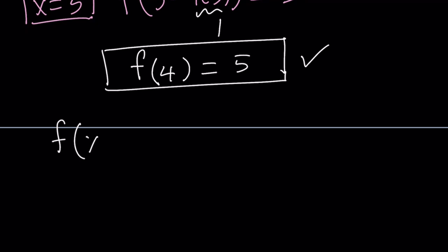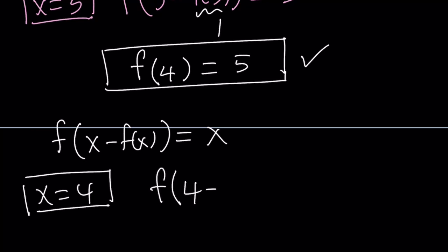So remember one more time, f of x minus f of x is given as x. Let me go ahead and fix this. So here it makes sense to replace x with 4. Let's do that. And that gives us f of 4 minus f of 4 equals 4.